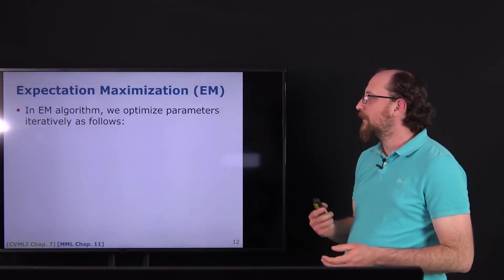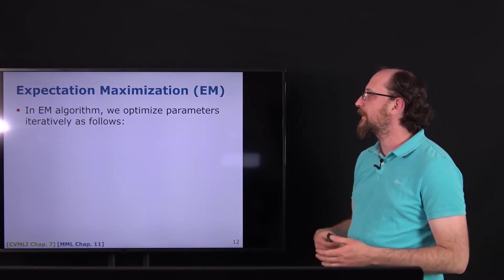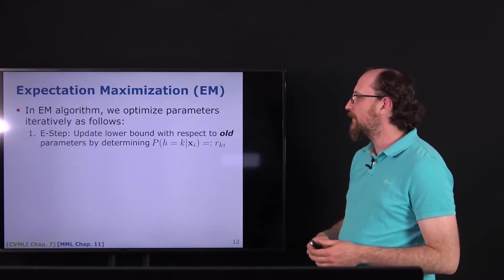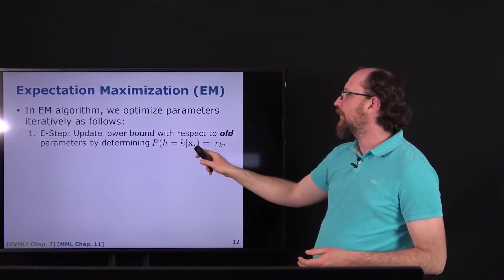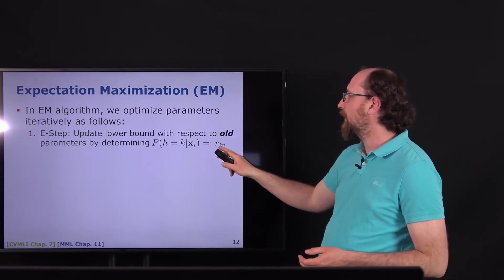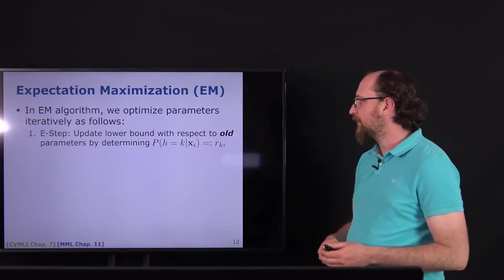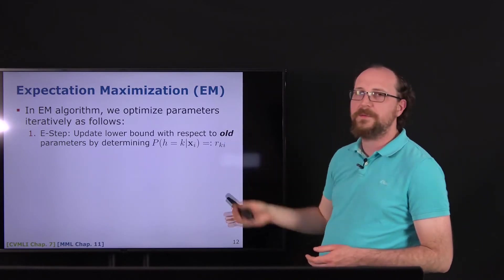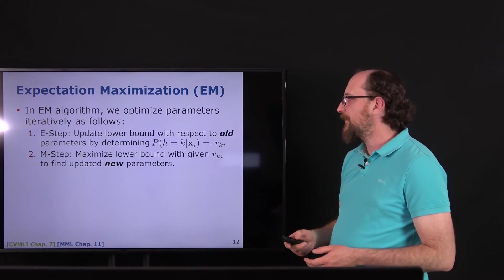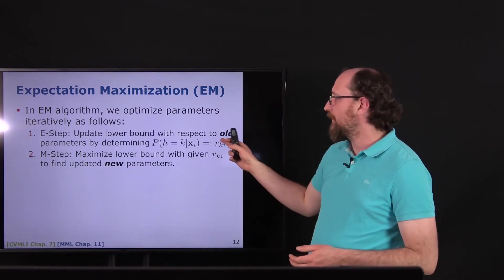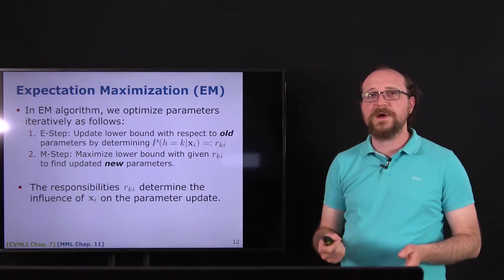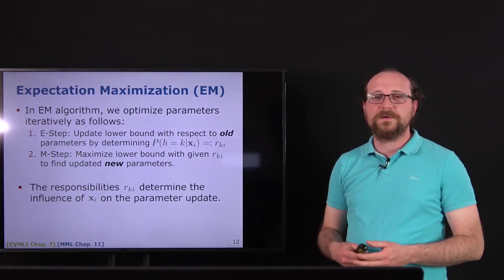For Expectation Maximization we optimize the parameters iteratively. In the E-step we update the lower bound by calculating the distributions p(h=k|x_i) for each example x_i — these are called responsibilities r_{ki} — using the old parameters. In the M-step we maximize the lower bound using the responsibilities found in the E-step and update the new parameters. The responsibilities determine the influence of x_i on the parameter updates.